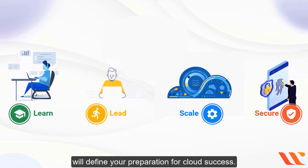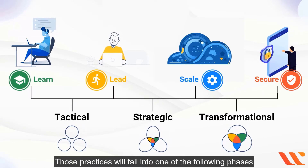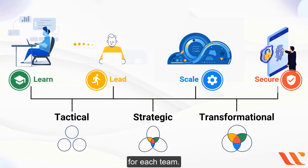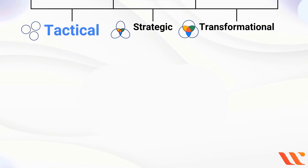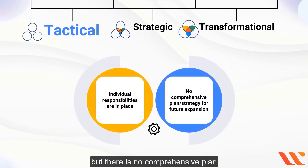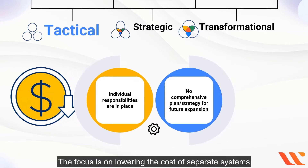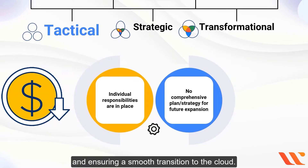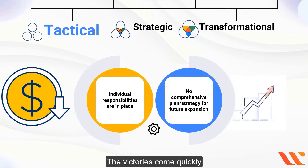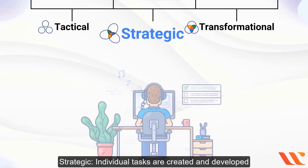Your present business practices in each of the four categories will define your preparation for cloud success. Those practices will fall into one of three phases. In the Tactical phase, individual responsibilities are in place but there is no comprehensive plan encompassing all of them. The focus is on lowering the cost of separate systems and ensuring a smooth transition to the cloud, with quick wins but limited room for growth.